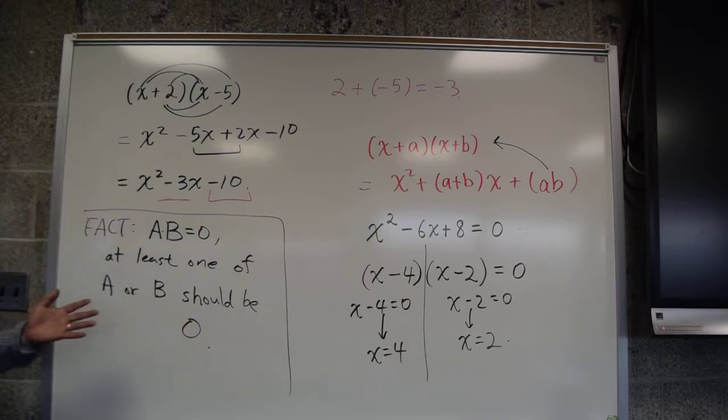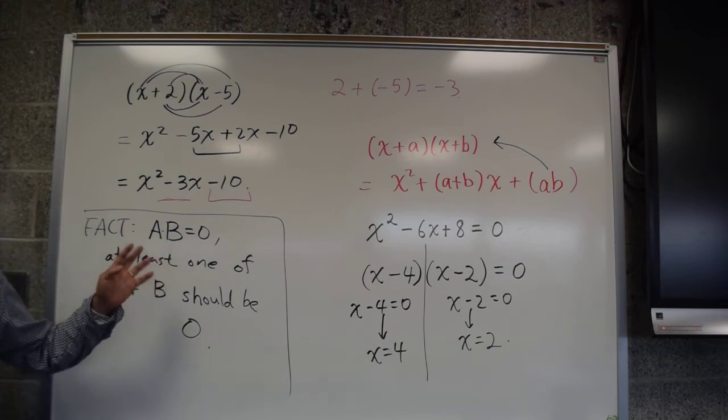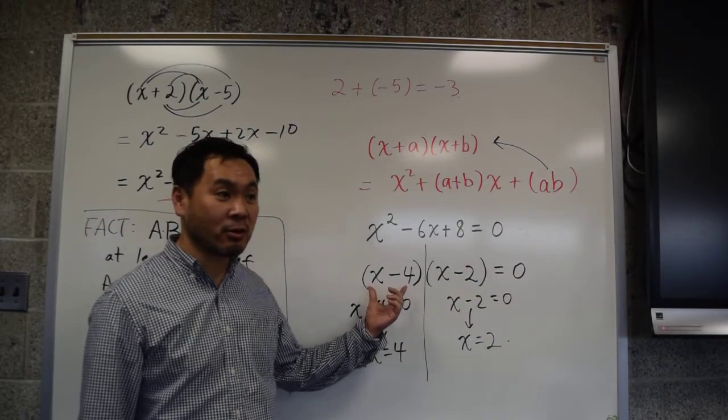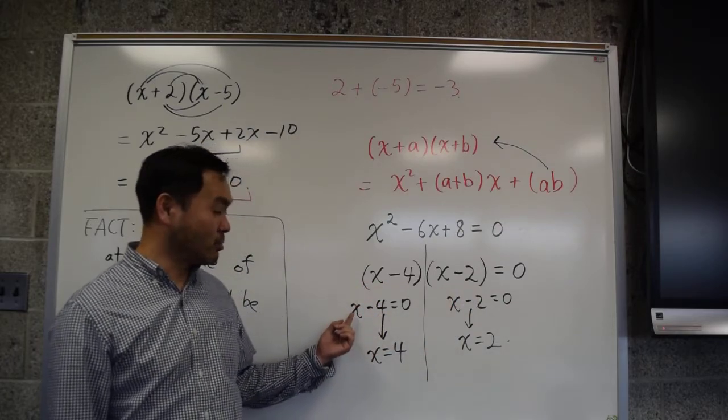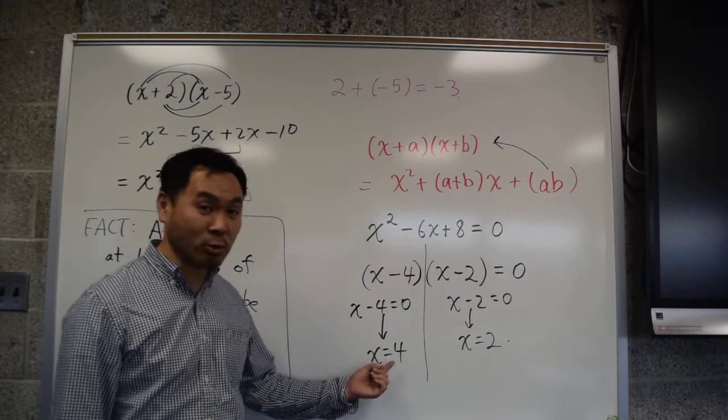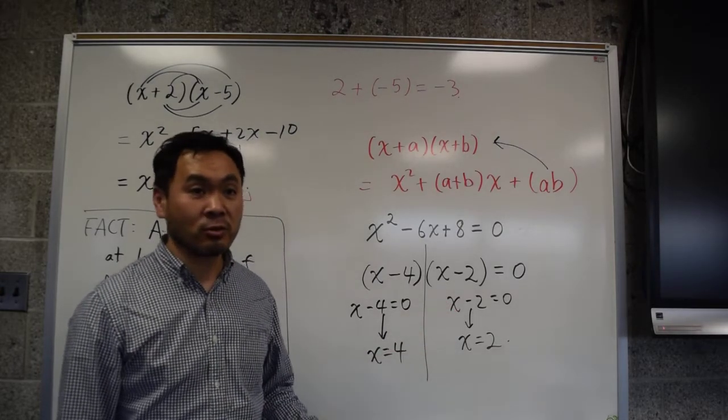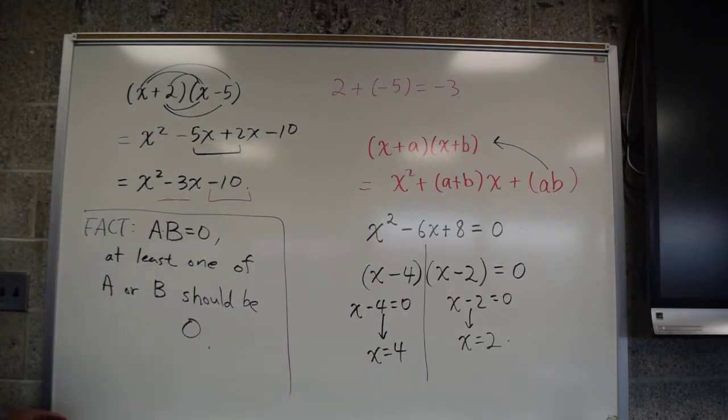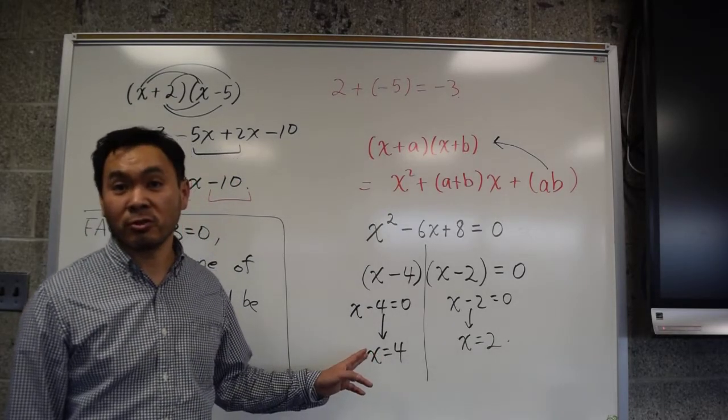This relies on the fact that if two numbers, so here's a fact, if two numbers a and b multiply to 0, at least one of a or b should be 0. It's kind of obvious, right? If you multiply two non-zero numbers, you never get 0. Only when you multiply by 0, you get 0. So, when we see that two things multiplied to 0, that means either this is 0 or that's 0. When is this 0? When x is 0, you see that if you add 4 both sides, you get x = 4. When this is 0, that's when x is 2. So, you have two solutions. When you solve a quadratic equation, you may have up to two solutions.